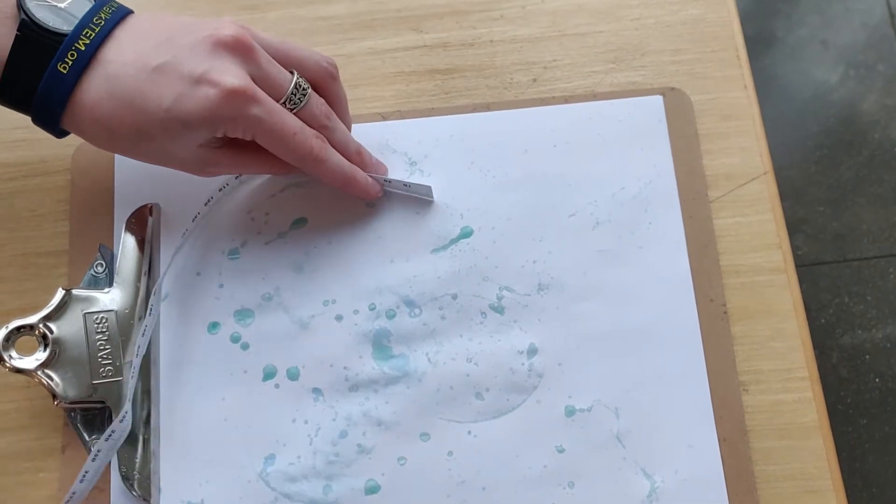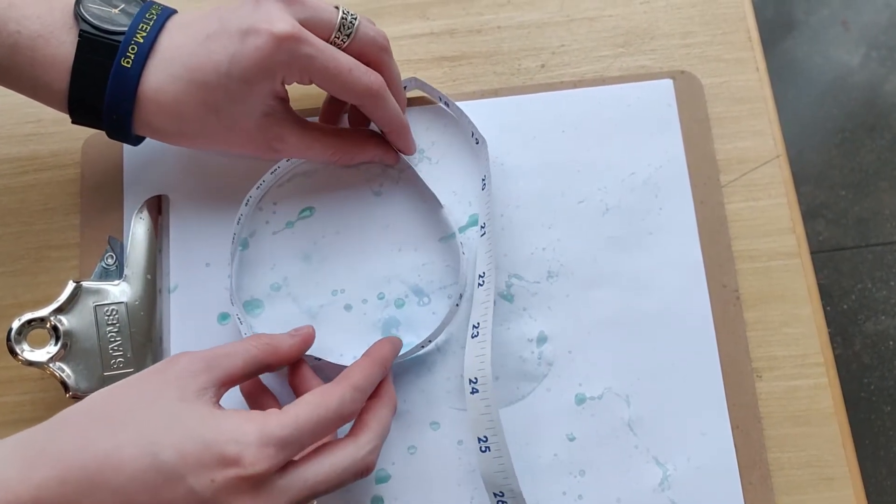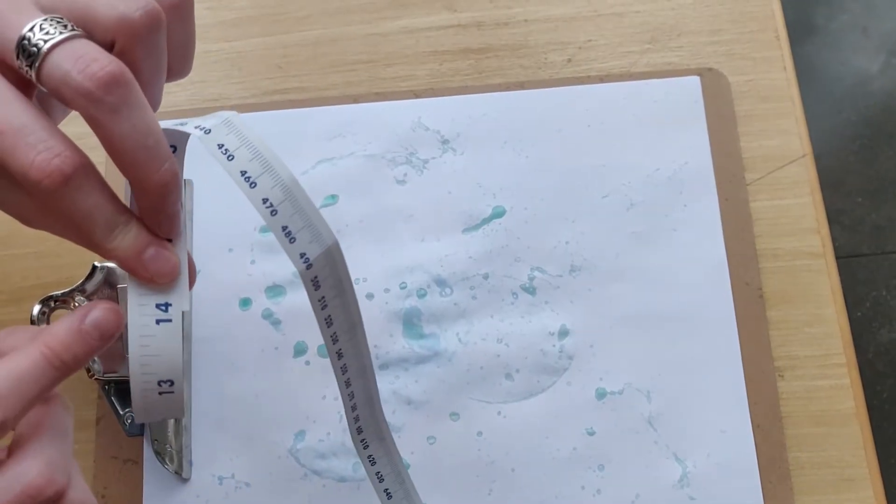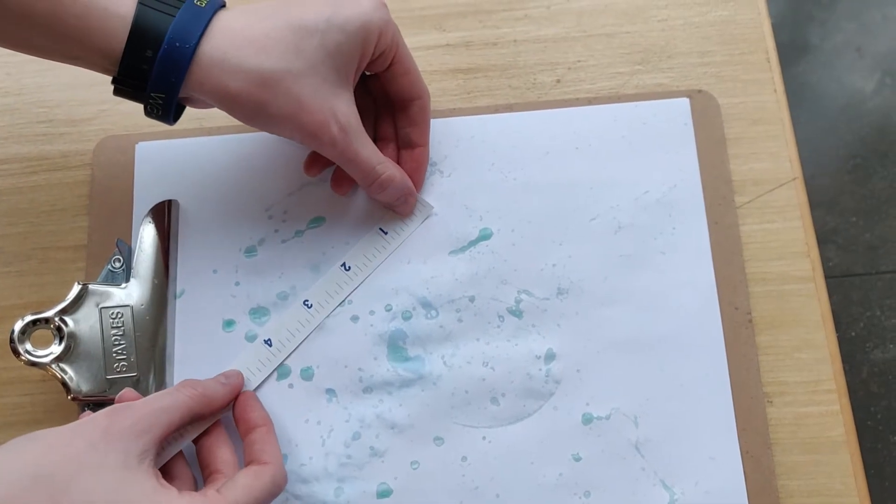So I'm going to pick a place to start. Just kind of do the best you can, measuring around the bubble. So I'm kind of happy with that. So that's 14 inches. I'm going to try to go through the center of the bubble while I'm measuring across. That's 4 inches.